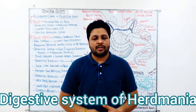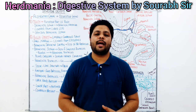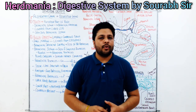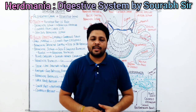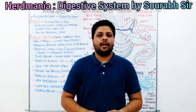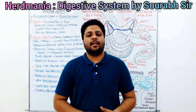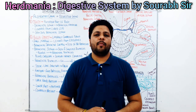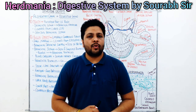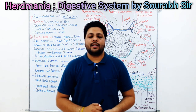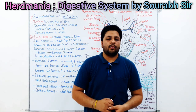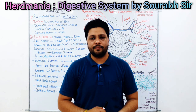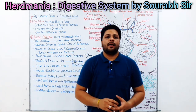The classification of Herdmania: its phylum is Chordata, sub-phylum is Urochordata, the class is Ascidiacea, the order is Stolidobranchia, and the family is Pyuridae. The genus is Herdmania. Herdmania has 12 species worldwide; it is cosmopolitan, with two species — Herdmania pallida and Herdmania mauritiana — also available in Indian seas.